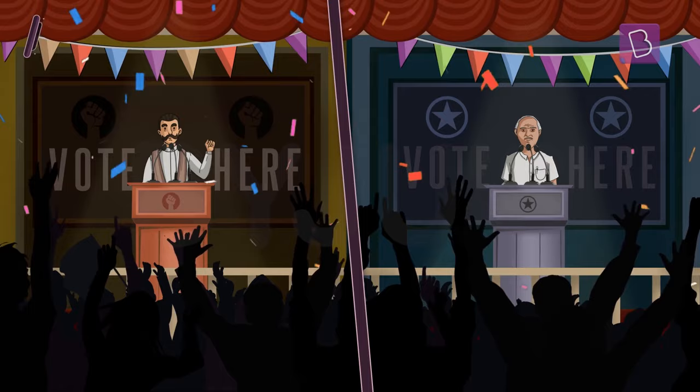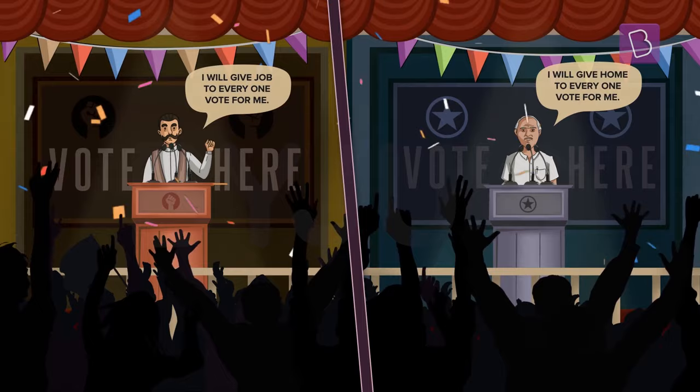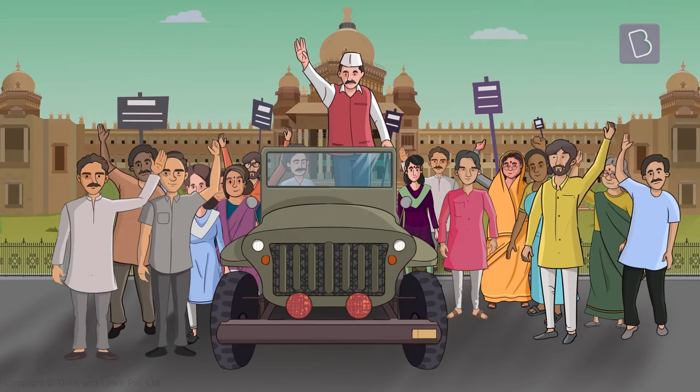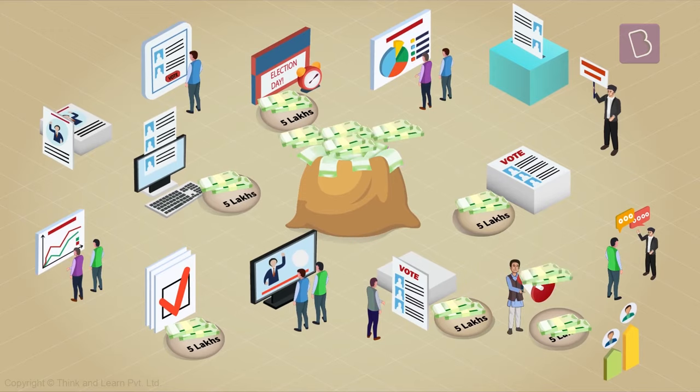During every election, you would have seen politicians claiming that they would implement certain schemes if they became chief minister. They organize huge rallies, print so many advertisements, and spend lakhs of rupees for their campaign. But why do these people want to be a chief minister? What are the powers possessed by a chief minister?